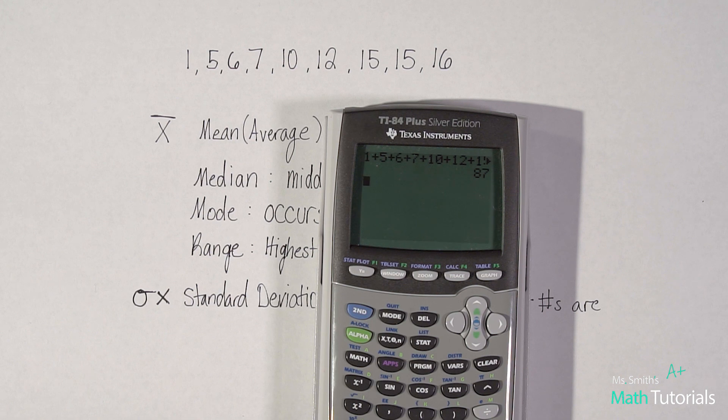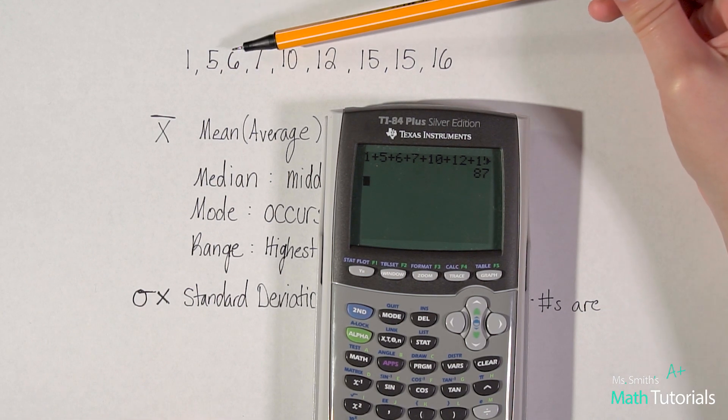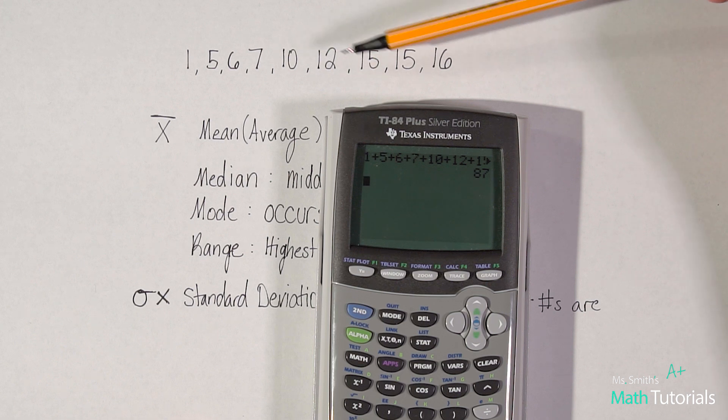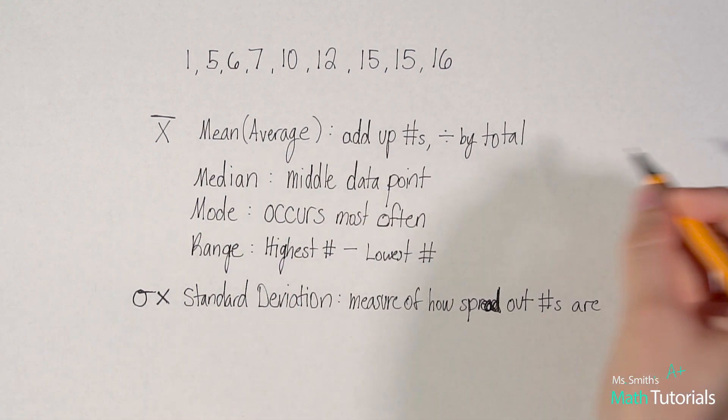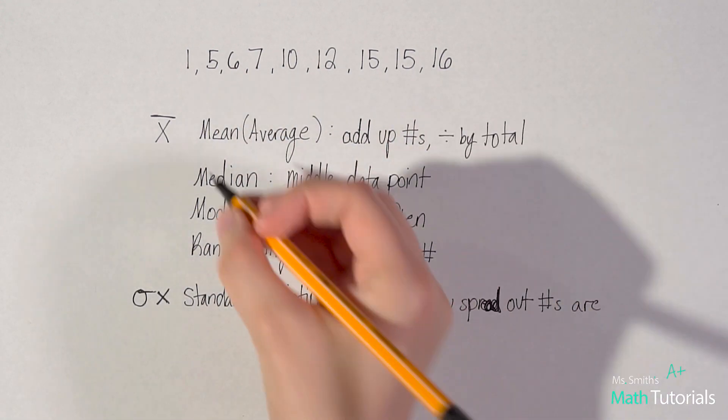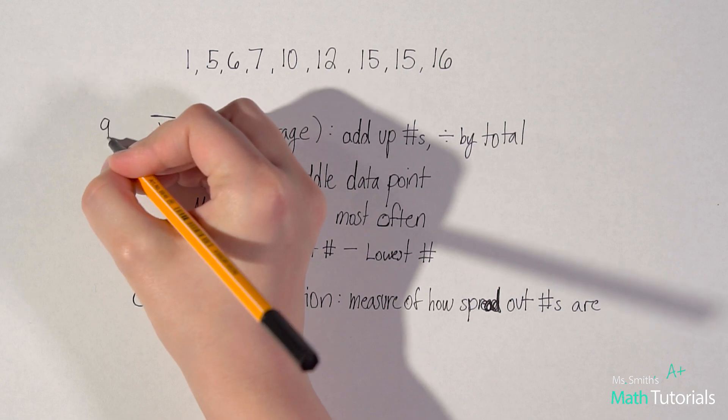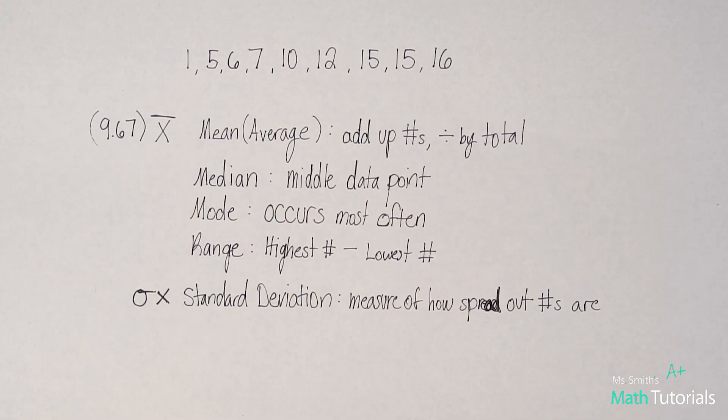And enter. So I got 87. But now I need to divide by the total number of numbers. Okay, so let's count how many numbers there are. One, two, three, four, five, six, seven, eight, nine. So I need to divide by nine. All right, and I get 9.6 repeating. Let's round that to just 9.67. So in this case, with this data set, my mean is 9.67. Okay.